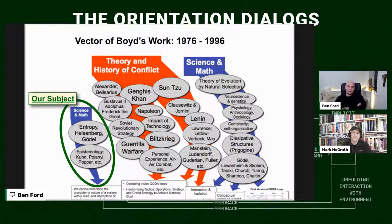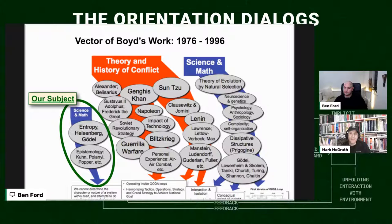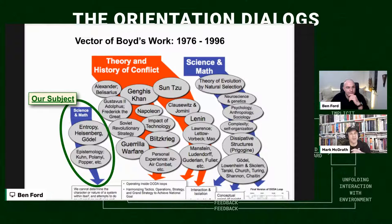Nothing is ever set in stone — there are always improvements to be made. John Boyd, if you read the biography by Robert Coram called Boyd: The Fighter Pilot Who Changed the Art of War, he read something like seven or eight different translations of Sun Tzu's Art of War, or Clausewitz. He took Clausewitz down line by line, accentuated the good and showed the faults.